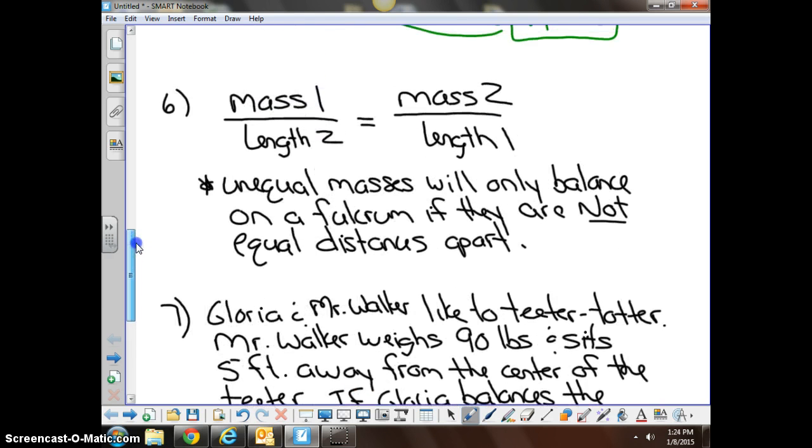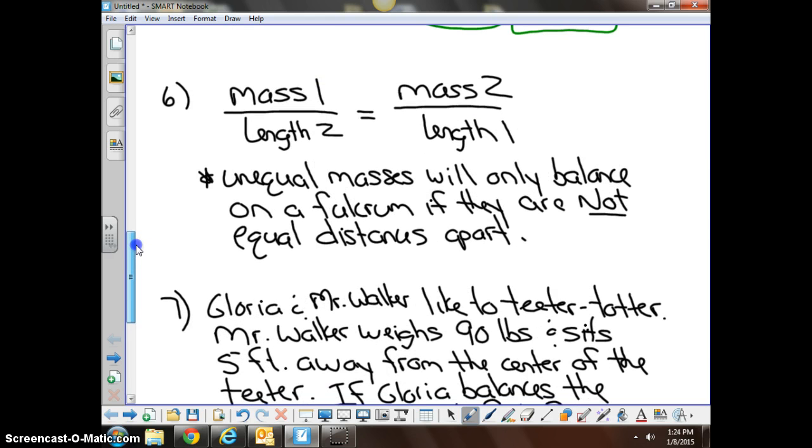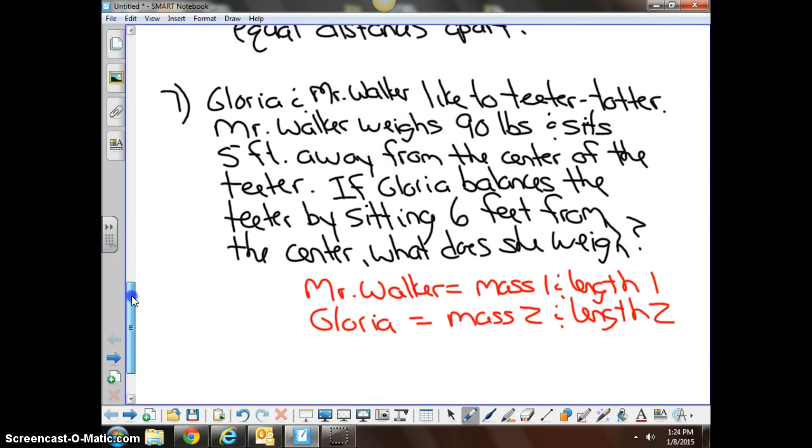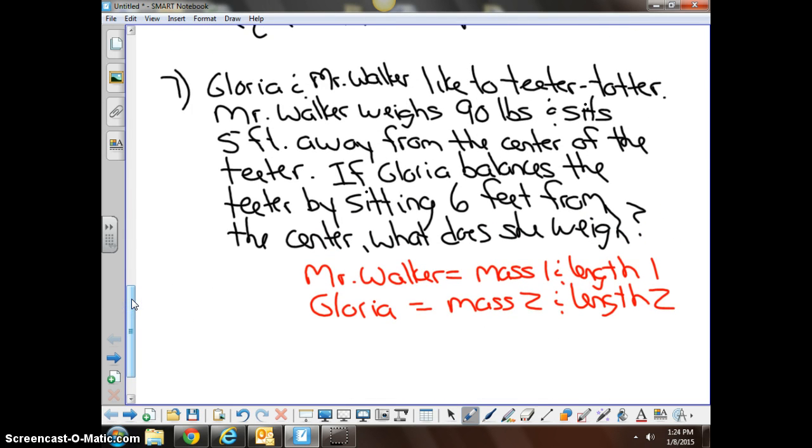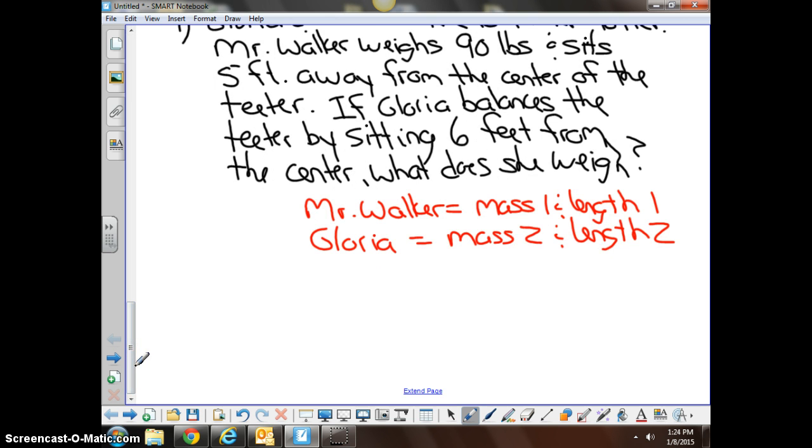Go back up to your formula, and let's start with Mr. Walker. If he is mass one and length one, we know everything we need to know about Mr. Walker. Okay, we know, I'm going to rewrite the formula here. Mass one over length two equals mass two over length one.